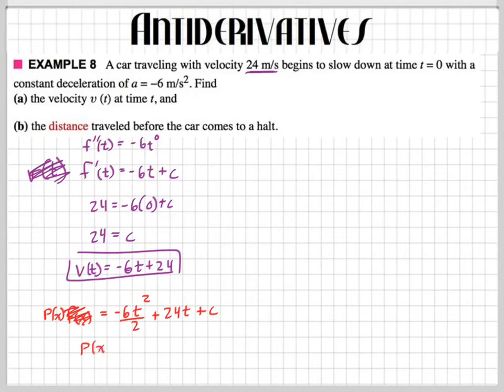Simplify, we get P of T equals negative 3 T squared plus 24 T plus C. Now, how am I going to find that C? Do I know the position? Okay, we're trying to find the distance traveled. Dang it, I put an X there again.